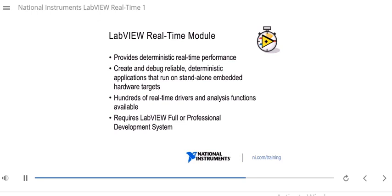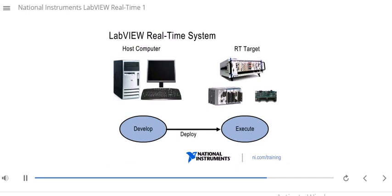You can use the LabVIEW Real-Time module to develop real-time applications with deterministic real-time performance in your VIs, targeting them at an RT target. You can create and debug reliable deterministic applications that run on a standalone embedded hardware target. The LabVIEW Real-Time module gives you hundreds of real-time drivers for multiple boards and analysis functions built into the palettes. It requires the LabVIEW full or professional development system. On your host computer — a Windows machine — you open LabVIEW with the Real-Time module, develop your real-time VIs, and then deploy and run them on the actual RT target.